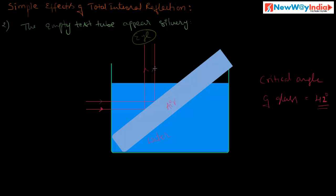These three rays all undergo total internal reflection and reach the eye. When you observe from the top of the water surface, these rays are coming from the surface of the test tube, so it looks silvery. The test tube looks silvery because of total internal reflection — we observe the reflected rays from the surface of the glass test tube, so it looks silvery.